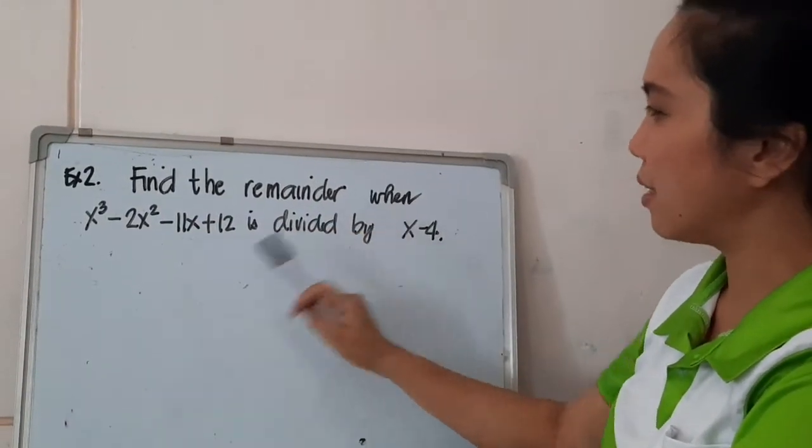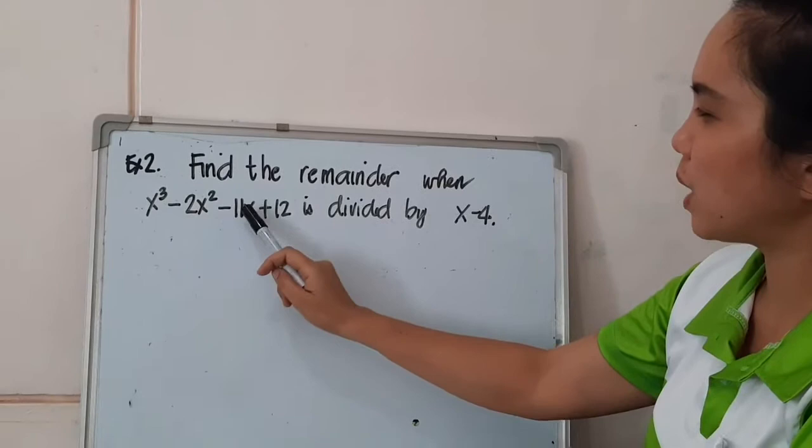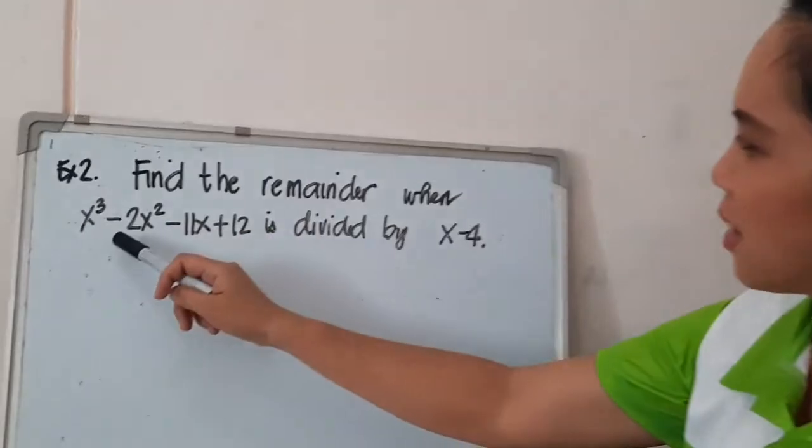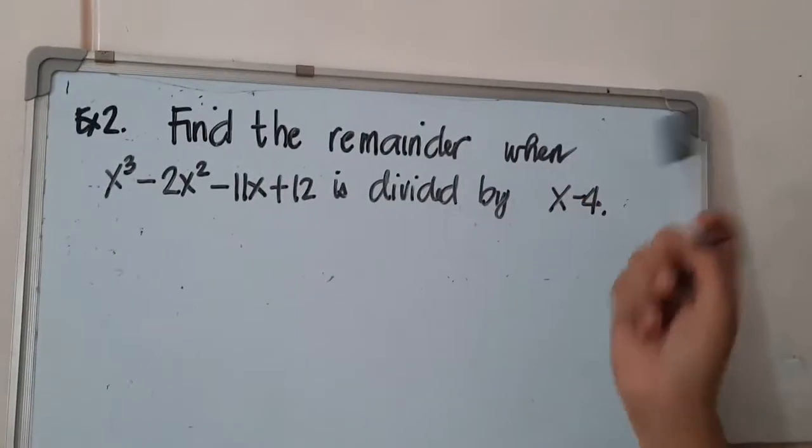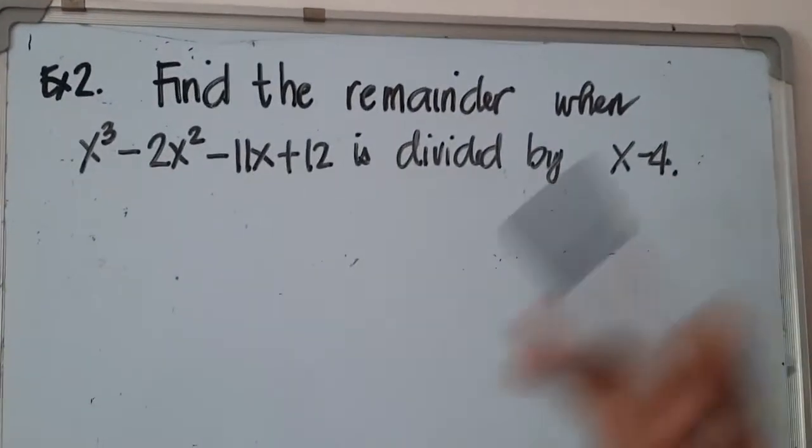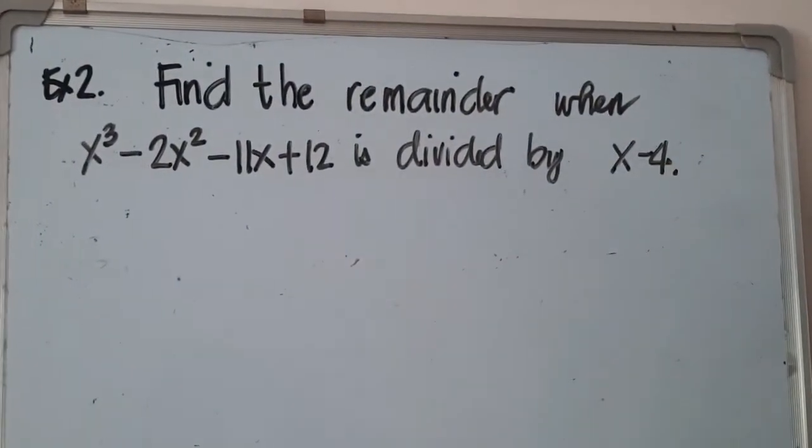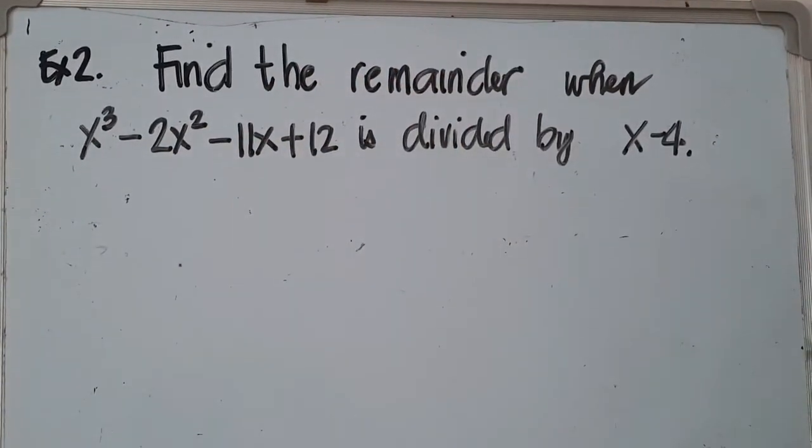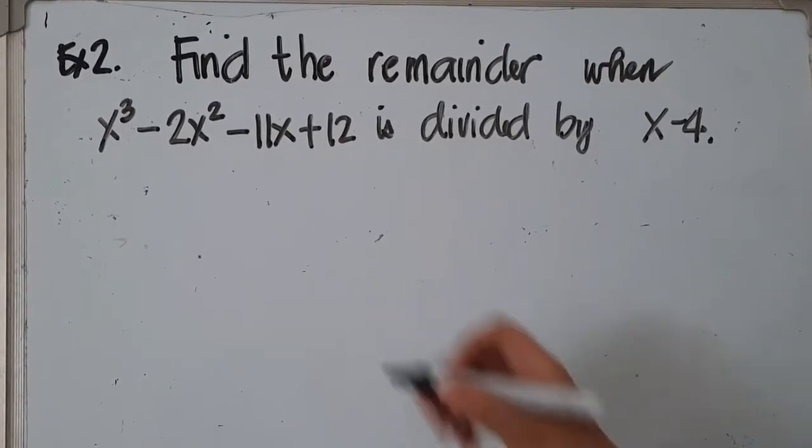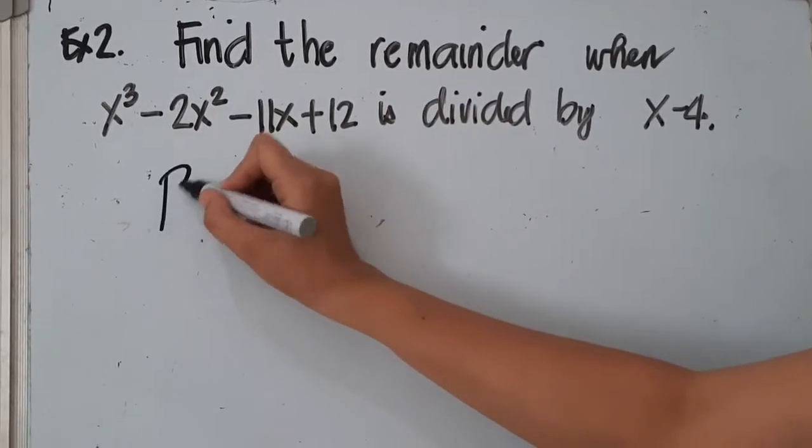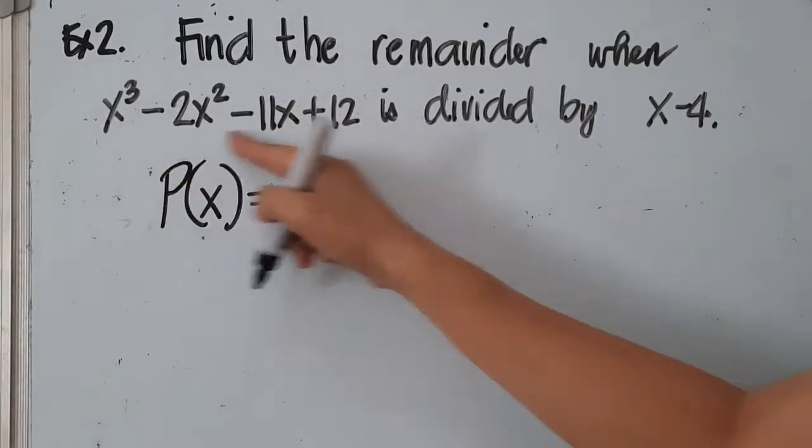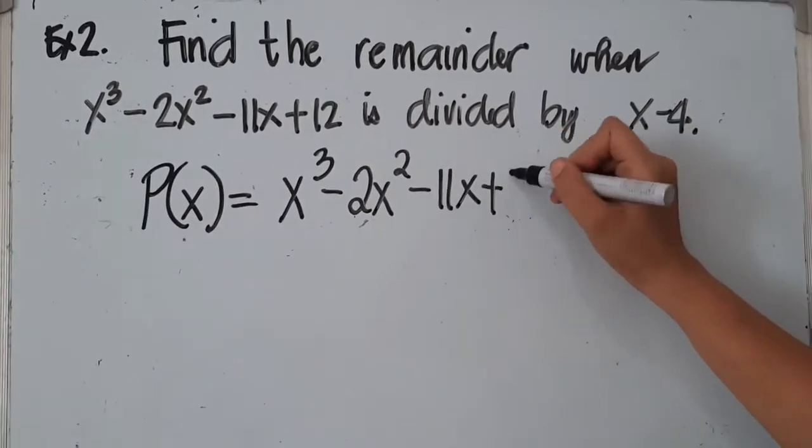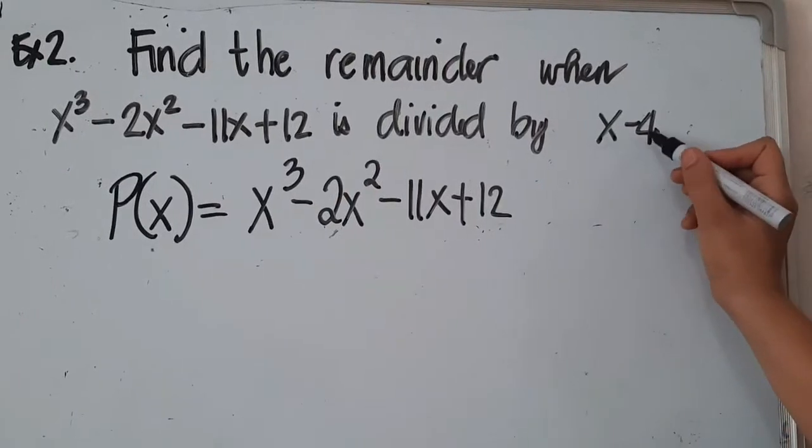Find the remainder when x cubed minus 2x squared minus 11x plus 12 is divided by x minus 4. So since our problem calls for remainder, you can use synthetic division, you can use long division, you can use remainder theorem. Whichever you are most comfortable with. So since I will be the one to solve this one, I'll be utilizing the remainder theorem. So what's the remainder theorem? So our polynomial of x is, our dividend is x cubed minus 2x squared minus 11x plus 12. And our divisor is x minus 4.